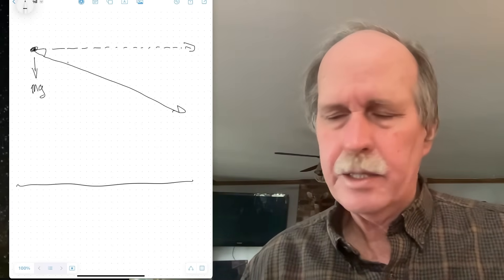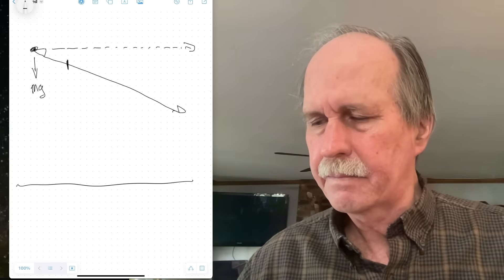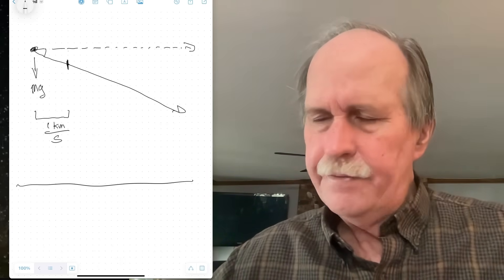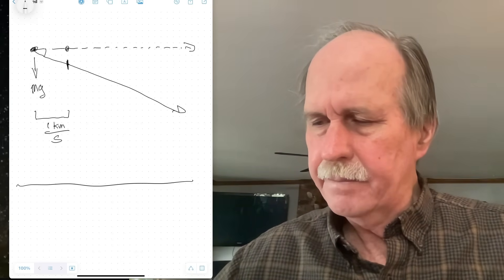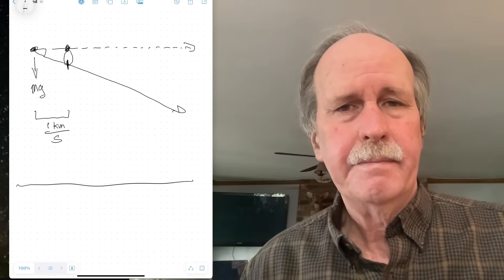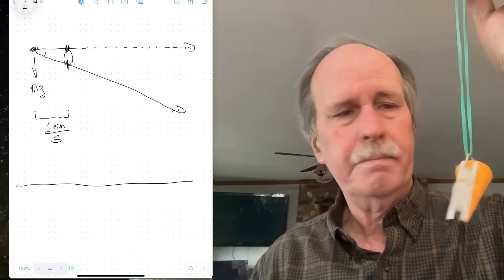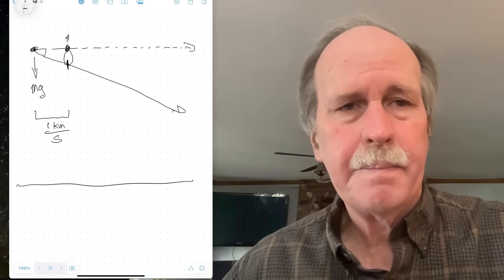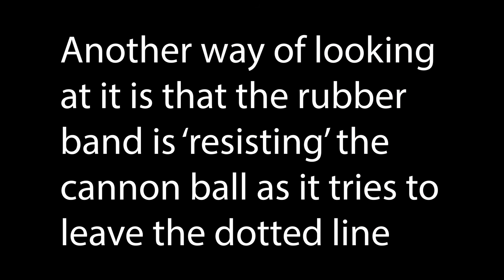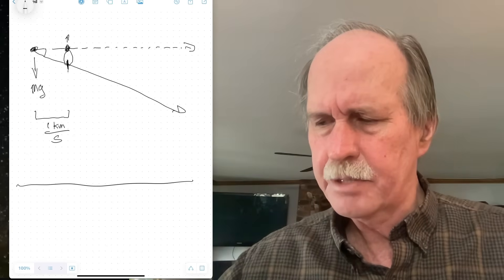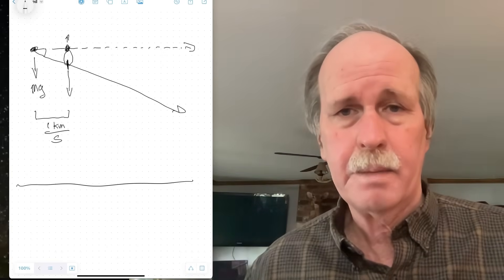Let's take an initial velocity of one kilometer per second. After one second, the cannonball is now at this hash mark, and notice that it is below the dotted line. If you imagine a rubber band on the dotted line attached to the cannonball down here at the sloping line, you can imagine that the cannonball is stretching that rubber band just a little bit — very much like my plumb bob and rubber band here. As a result, it's applying a little bit of force in the opposite direction, trying to pull the cannonball back to the dotted line. But it's a very small force compared to the vector of gravity, so the cannonball continues to go down.